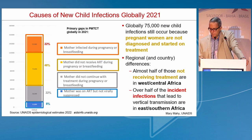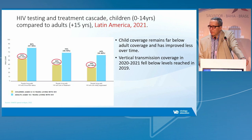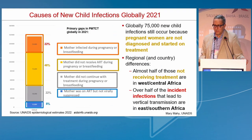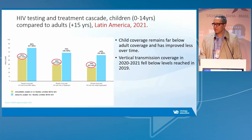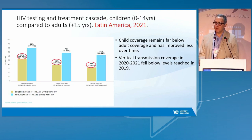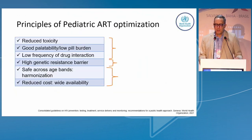Our problem is clearly associated with diagnosis and early intervention, as well as adequate treatment for women in Latin America. This is the cascade of testing and treatment — you can see how the pediatric population is far behind compared to the adult population. Viral suppression in children under treatment in Latin America is lower than 40%, which is why we need to optimize treatment and have better therapeutic regimens for this population.